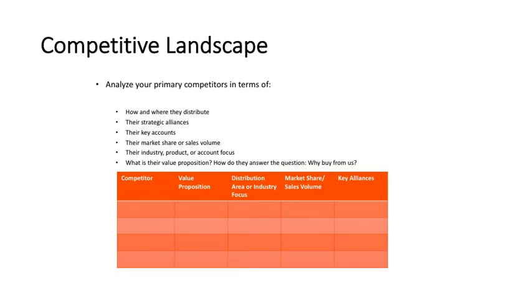Competitive landscape. The best way to gain a marketing advantage is to know who you are up against and how they operate within the market. Analyze your primary competitors in terms of how and when they distribute their strategic alliances, their key accounts, their market share or sales volume, their industry, product, or account focus. What's their value proposition — how do they answer the question, why buy from us?